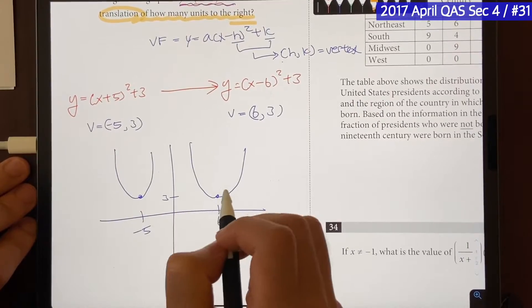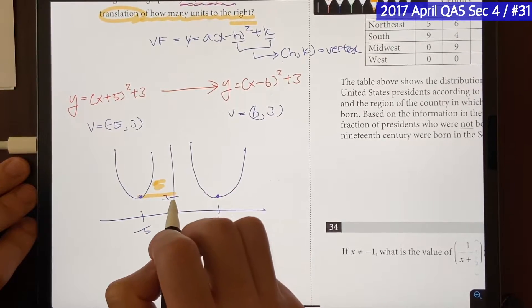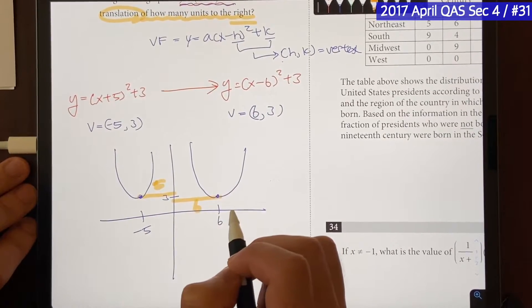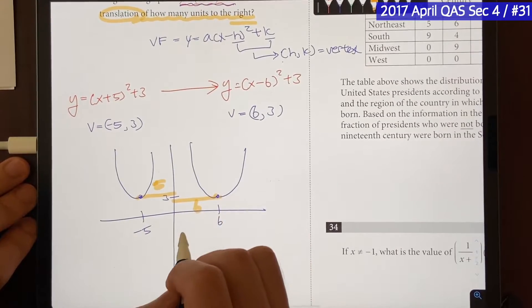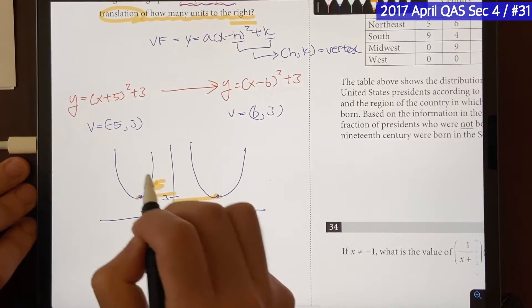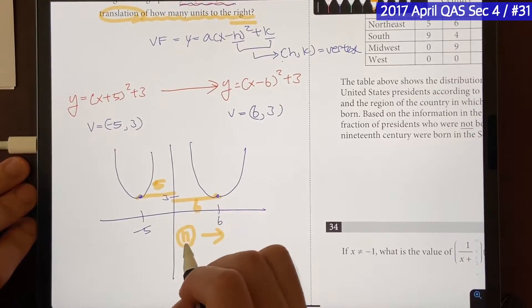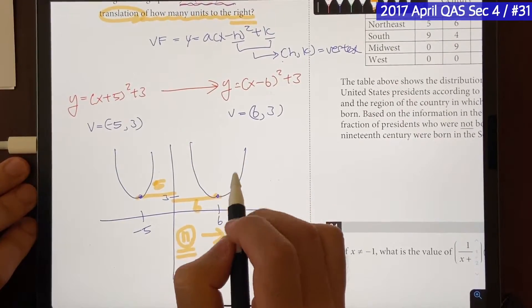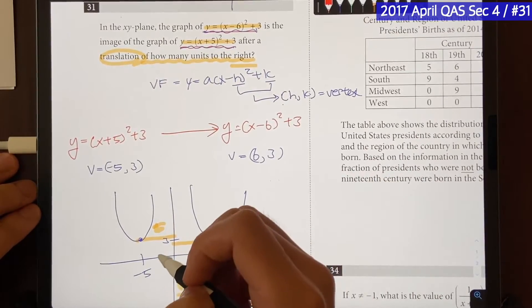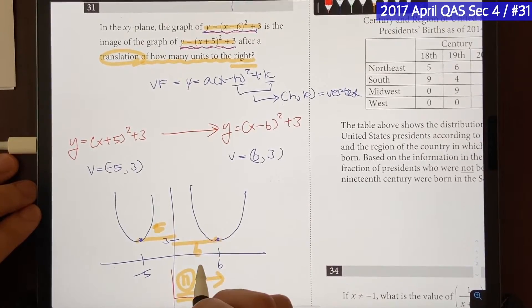And by looking at the vertex, we're going to see that, okay, that's going to be about 5 units here, and that's going to be about 6 units there. That means these two graphs are about 11 units apart, which means we have to move this graph right 11 units in order for us to end up with this graph, which is what the question is asking us to find. Therefore, our answer will be 11.